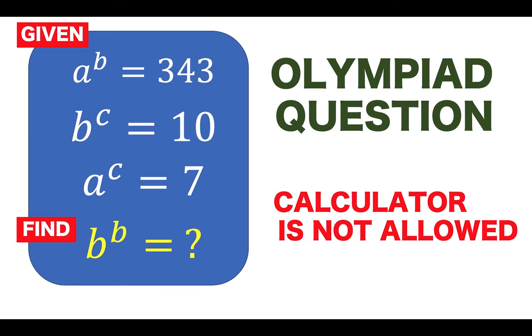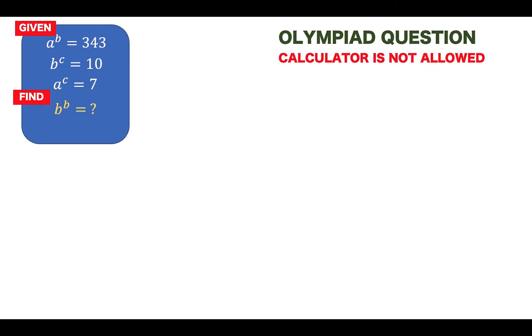Now, let's solve this problem together. Let's begin with the given A raised to B equals 343. This 343 can be written as 7 raised to the third, but it is given that A raised to C is equal to 7, so we can replace this 7 by A raised to C.